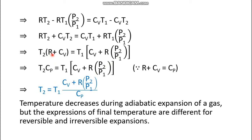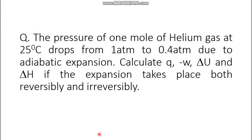We know that R plus Cv equals Cp, so substituting Cp on the left side, we finally get the expression: T2 equals T1 times (Cv plus R·p2/p1) divided by Cp. We can conclude that temperature decreases during adiabatic expansion of a gas, but the expressions of final temperature are different for reversible and irreversible expansions. Let's elaborate with a numerical example — solving this will make the facts much clearer.